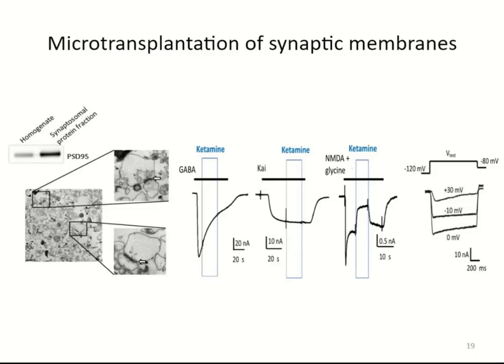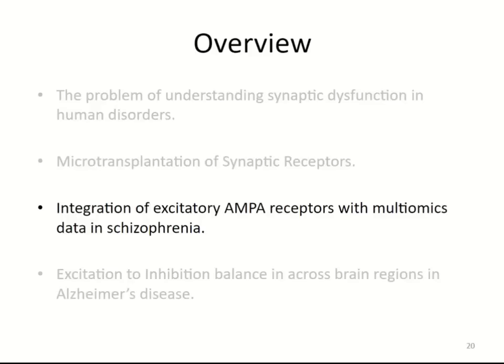Because we have these responses, we can test drugs of clinical importance. Ketamine is important for drug abuse, anesthesia, major depression disorders, and schizophrenia due to its association with psychosis. Because all these responses come from the same oocyte, we can take ratios one to another. From the data shown here, ketamine is specific for NMDA receptors and doesn't affect GABA or AMPA responses. This is very convenient because everything is in the same oocyte.